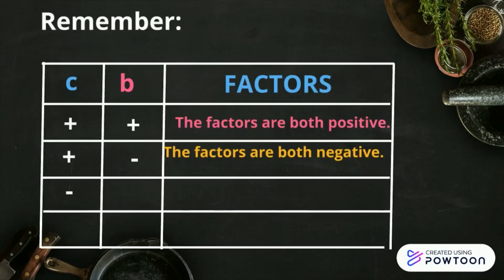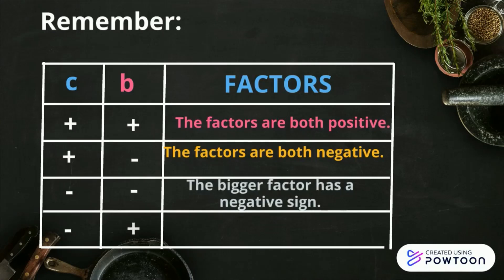If c is negative and b is negative, the bigger factor has a negative sign. If c is negative and b is positive, the bigger factor has a positive sign. Okay? Remember all that.